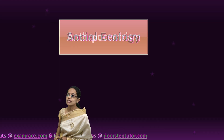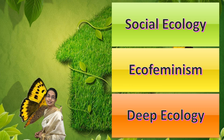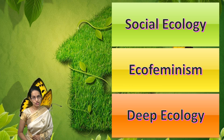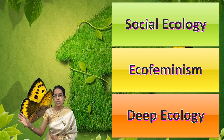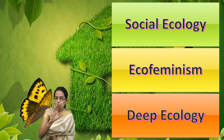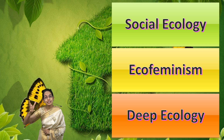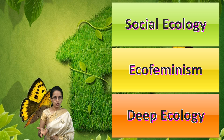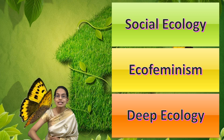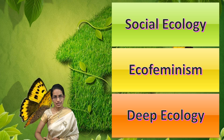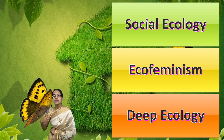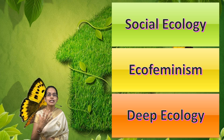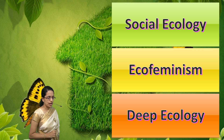There is an interesting concept called radical ecology. Radical means a new, fundamentally changing way of life and of human understanding. This fundamental change brought about three important streams under environmental ethics: social ecology, ecofeminism, and deep ecology.